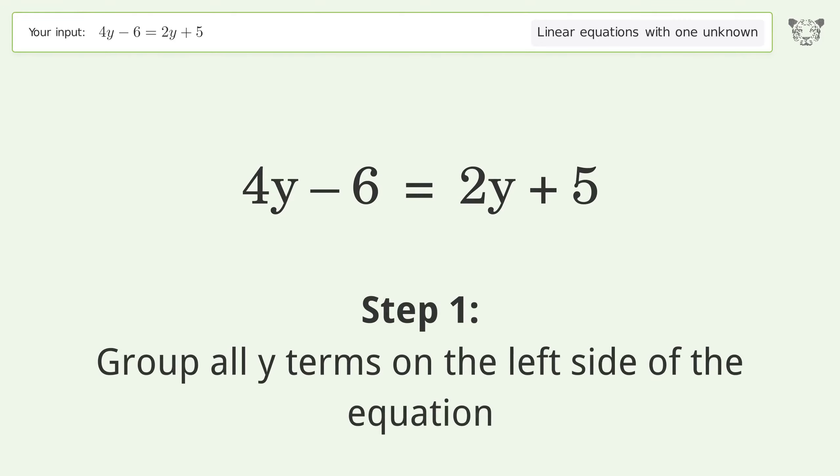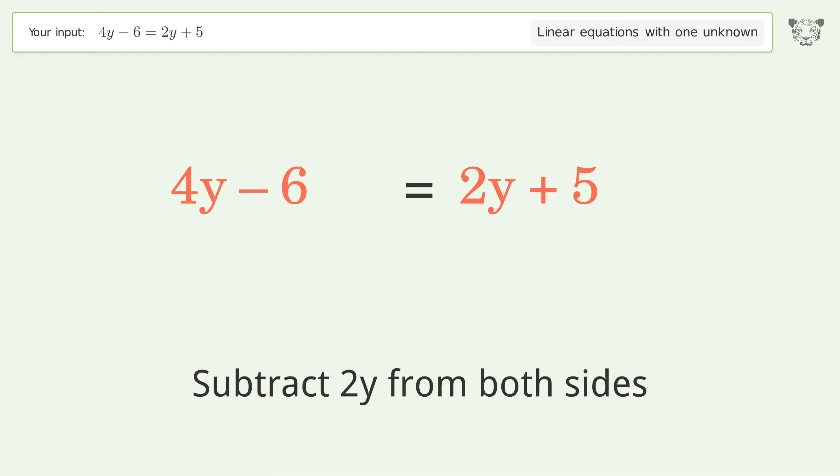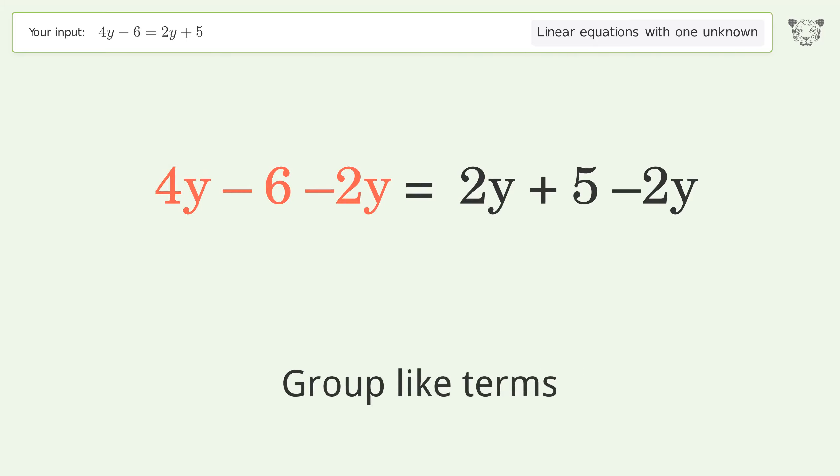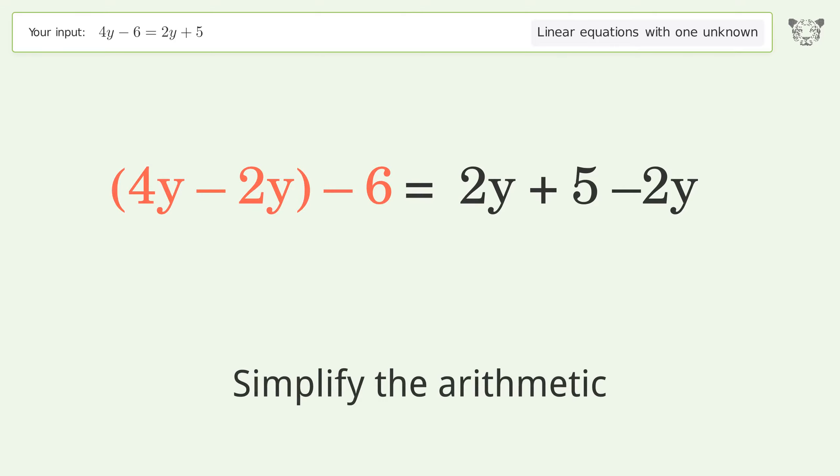Group all y terms on the left side of the equation. Subtract 2y from both sides. Group like terms and simplify the arithmetic.